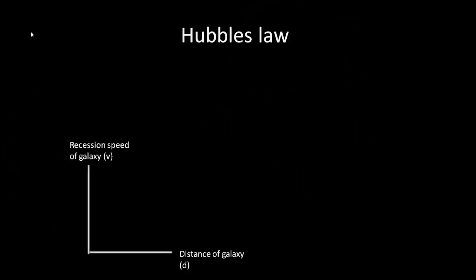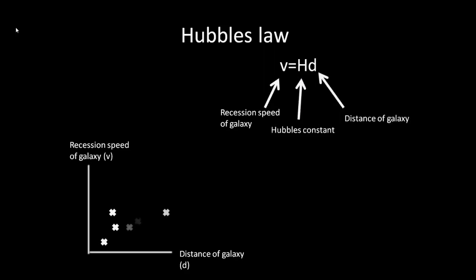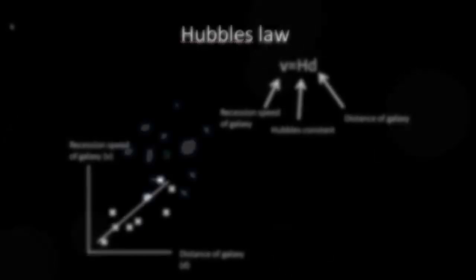So how can we use this to find Hubble's constant? We could plot a graph of the recession speed of the galaxy against distance and draw a scatter plot. The gradient of the straight line will be equal to Hubble's constant. This is how we can calculate Hubble's constant.